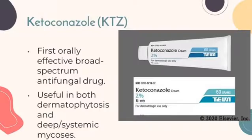Ketoconazole is one example of imidazole. It is the first orally effective broad-spectrum antifungal drug and is useful in both dermatophytosis and deep systemic mycosis. It is also effective in the treatment of dermatophytosis as an alternative to griseofulvin, and is very effective in histoplasmosis, blastomycosis, coccidioidomycosis, cryptococcosis, and mucocutaneous candidiasis. It is less potent but less toxic than Amphotericin B. After oral administration, gastric acidity facilitates absorption. It causes microsomal enzyme inhibition, affecting the metabolism of many drugs, and also inhibits steroidogenesis.